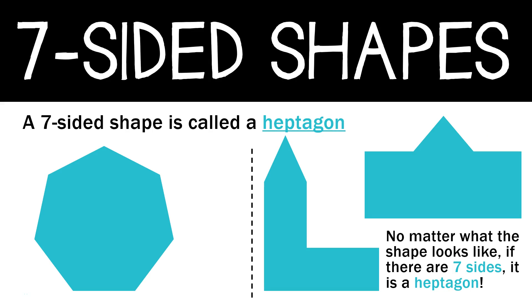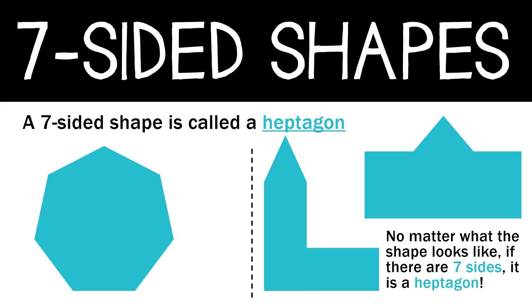Next we have a seven-sided shape. The seven-sided shape sounds very similar to a hexagon, except it is called a heptagon. This is what a heptagon usually looks like, but you know the drill — no matter what the shape looks like, if there are seven sides, it's going to be a heptagon. Pause the video and write down this sentence: A seven-sided shape is called a heptagon. When you have that sentence written down, unpause to move on to the next shape.